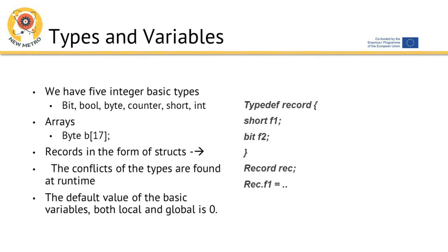There are five integer basic types: bit, bool, byte, short, and int. Arrays — for example, byte b[17] — and records in the form of structs are also available. Type conflicts are found at runtime. The default value of the basic variables, both local and global, is zero.